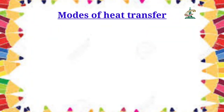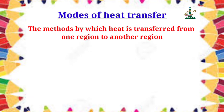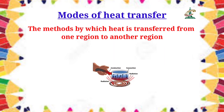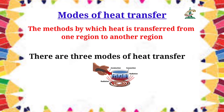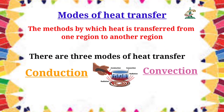Let's discuss about the modes of heat transfer. What I mean by modes of heat transfer? The methods by which heat is transferred from one region to another region — वो methods जिनसे heat from one region to another region transfer होती है, उस method को हम modes of heat transfer कहते हैं। There are three modes of heat transfer: number one is conduction, second is convection, and third is radiation.